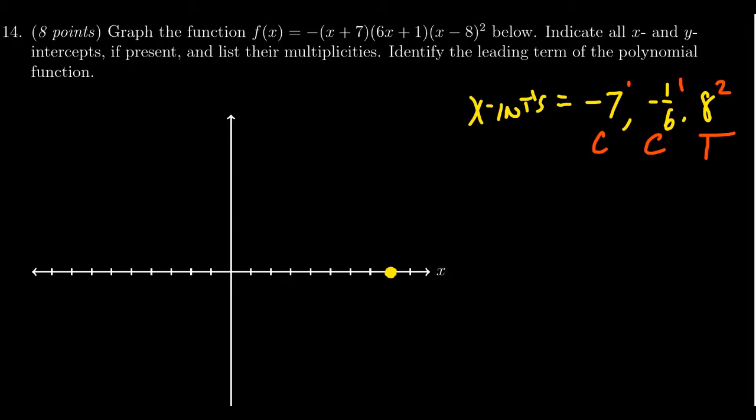Then we have -7. 1, 2, 3, 4, 5, 6, 7. So we can do that one right here. And then with -1/6, this should be really close to the origin. So that's perhaps not perfect, but we'll get there.